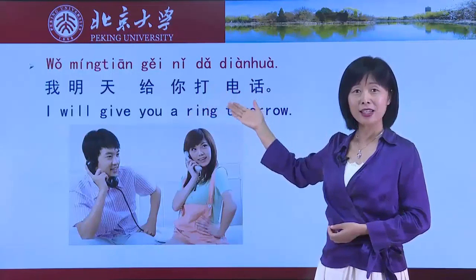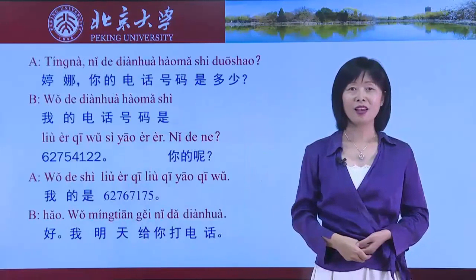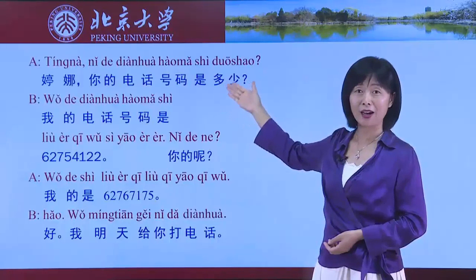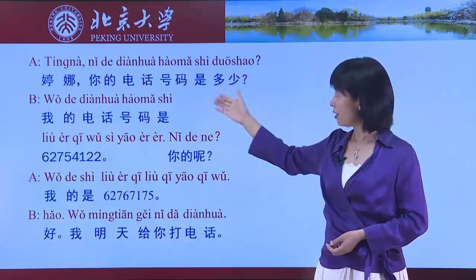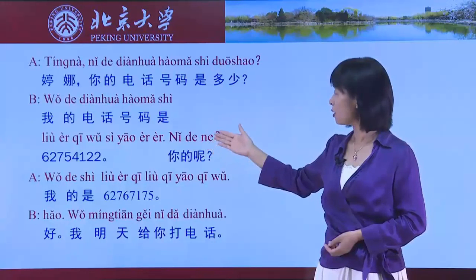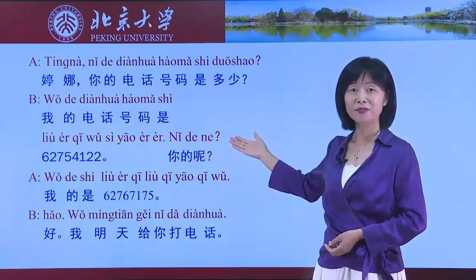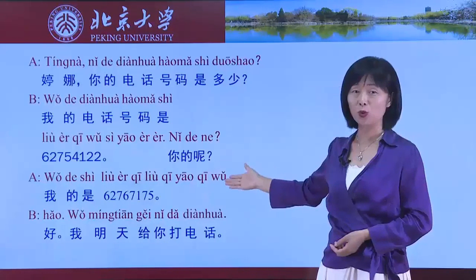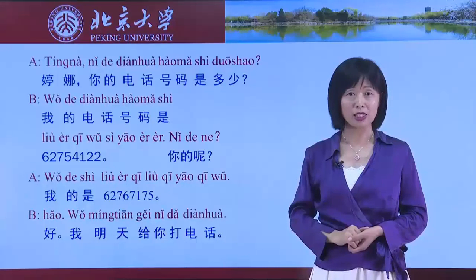Let's read the text. 停娜，你的电话号码是多少？ 我的电话号码是六二七五四一二二。你的呢？ 我的是六二七六七一七五。好，我明天给你打电话。That's all for today. 谢谢，再见！